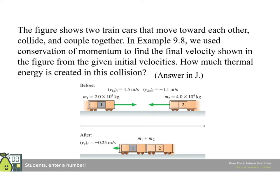Alright, the figure shows two train cars that move towards each other and couple together. In an earlier example in the textbook we had used conservation of momentum to find the final velocity shown in the figure from the given initial values. How much thermal energy is created in this collision? We're going to find initial kinetic energy which is 1 half the mass of the first times its initial speed squared plus 1 half mass of the second times its initial speed squared. And then kinetic final is 1 half the sum of their masses times that final speed squared. And we know that delta K is going to give us E thermal.